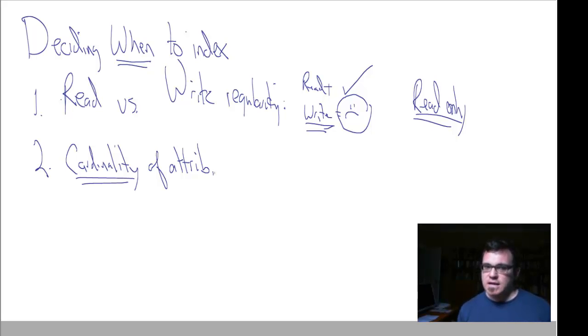But basically when we're talking about cardinality in the context of an attribute that we're trying to decide whether to index or not, what we're saying is how many unique values are there for that attribute in the database relative to how many total observations there are.